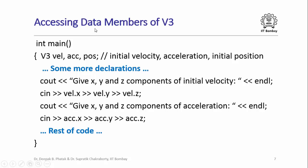Recall how we also accessed data members of the structure V3. For example, in the motion simulator program from the last lecture, in the main function we had variables like velocity, acceleration and position all of type V3, and we actually read in the X, Y and Z components of velocity, acceleration and so on. Here we directly read in the value of member X of velocity, member Y of velocity and member Z of velocity, and similarly for acceleration. So we had unrestricted access to the data members of the variable velocity of type structure V3.